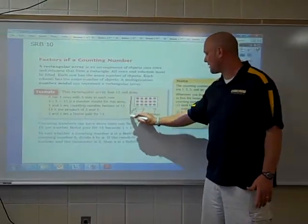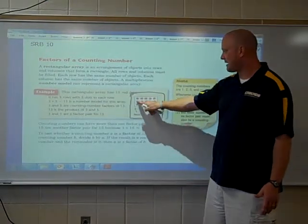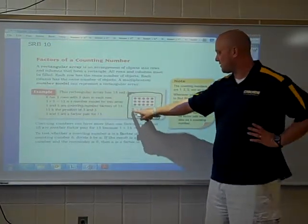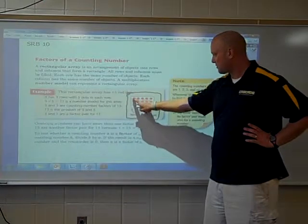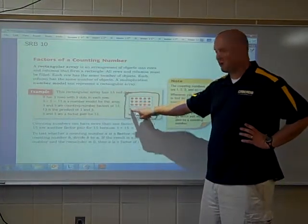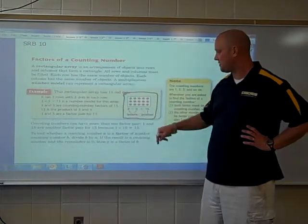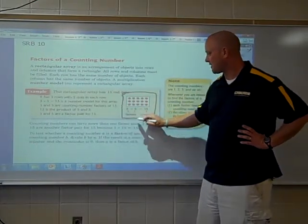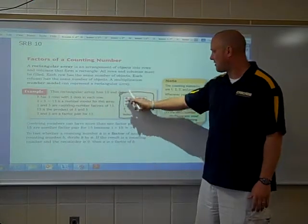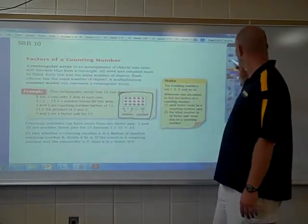Down here in this little box, you can see an example of what an array is. It's taking the dots and putting them in certain rows and columns. You can see there's three right here, which will equate to one of the factors, and then you have five going this way as well, which will equate to a factor. So there's your two factors that you have in an array, and then your product is the number of dots that you have all together.